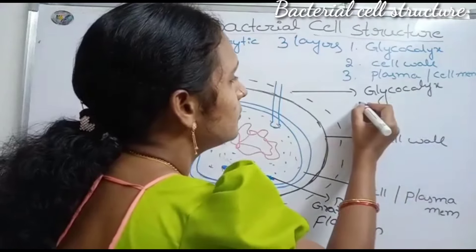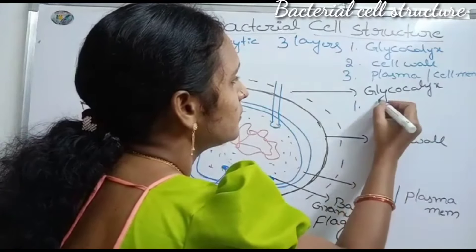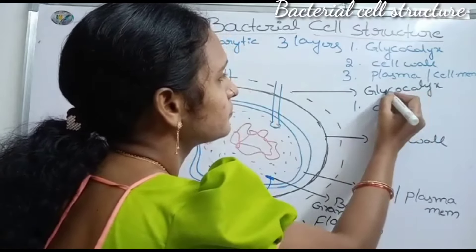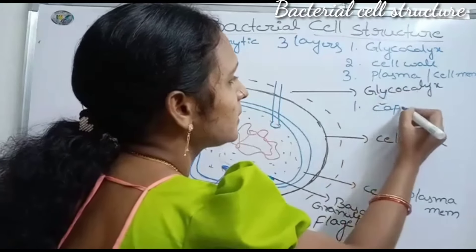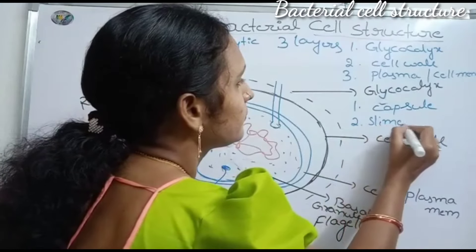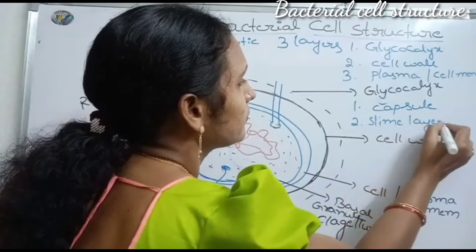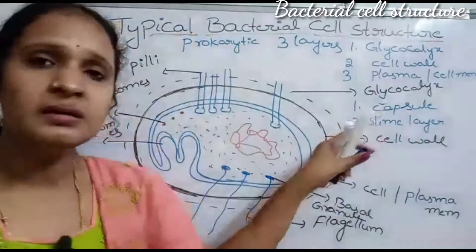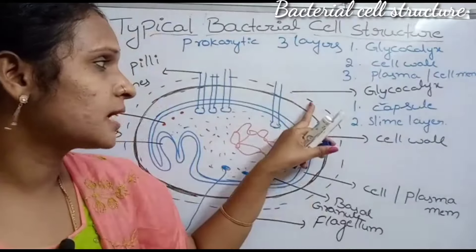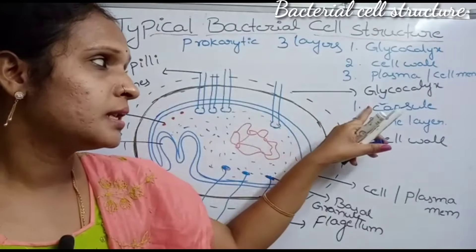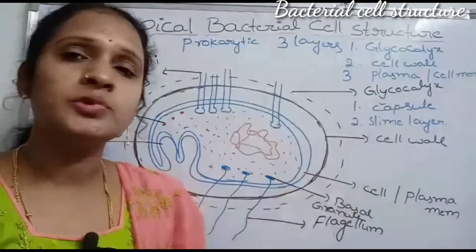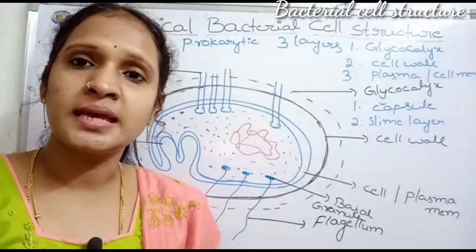The glycocalyx is again made up of two layers: one is the capsule and the next one is the slime layer. The capsule is the thick layer covered by a gelatinous coat.